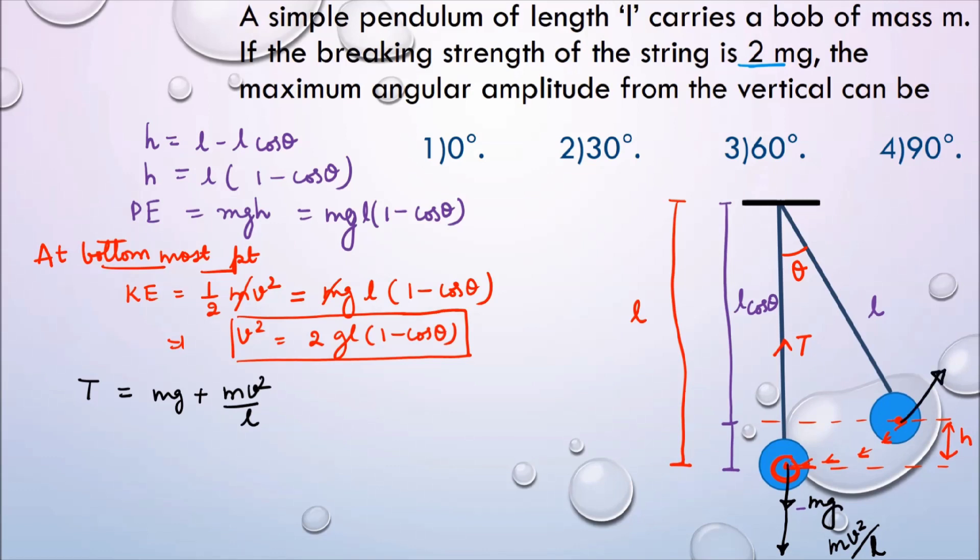Now, what happens if I increase the initial angular displacement? If I increase the initial angular displacement, the potential energy increases. As the potential energy increases, the velocity at the bottom also increases. As the velocity at the bottom increases, tension increases. If the tension exceeds 2 mg then the string breaks.